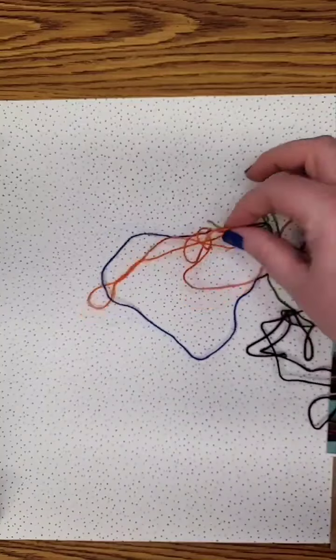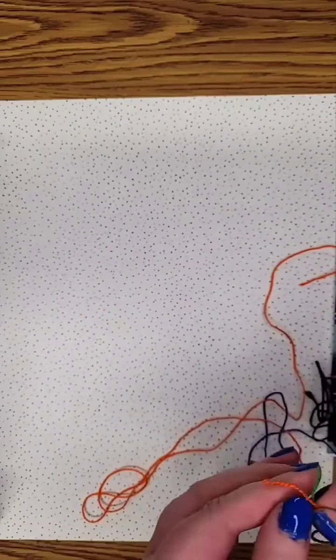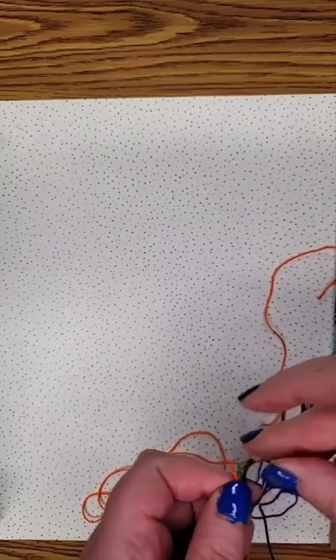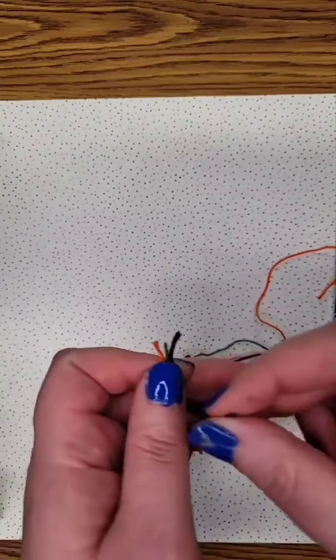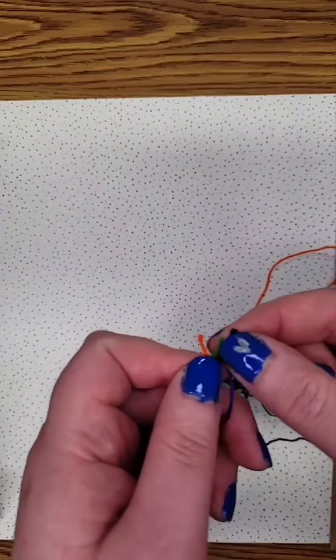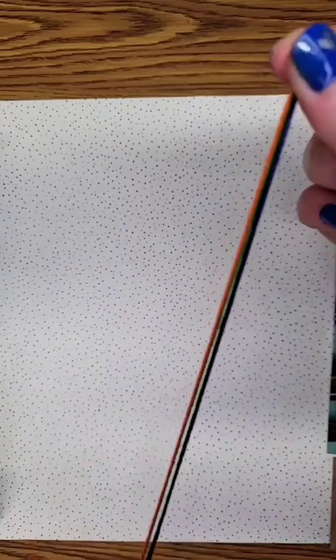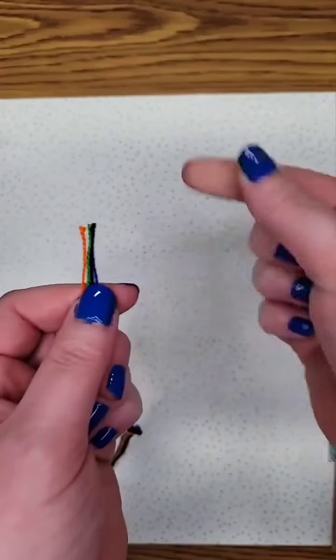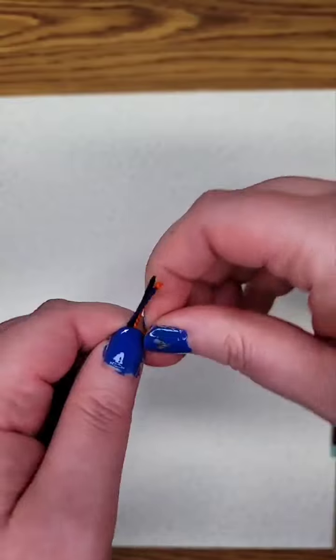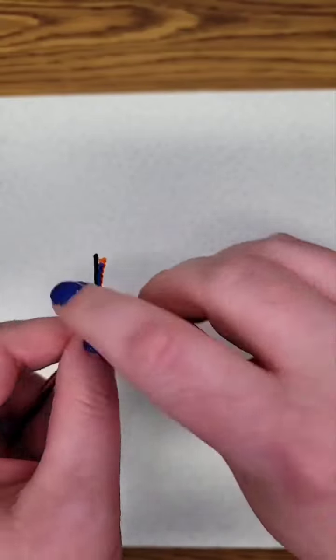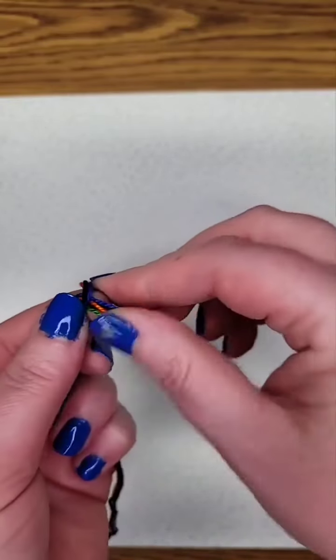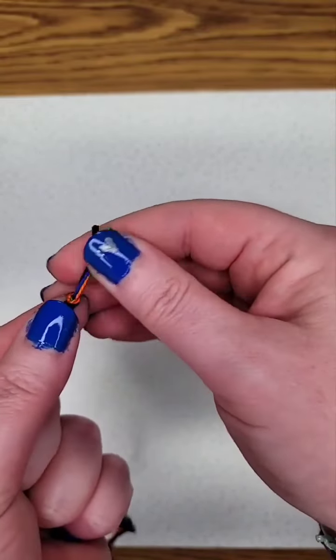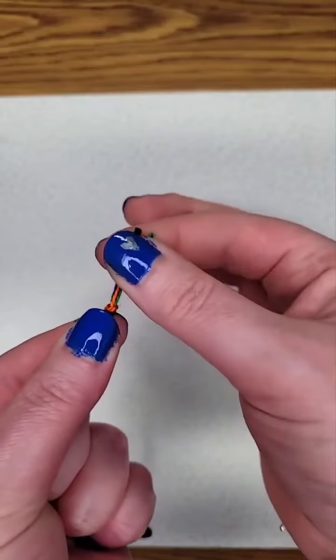Alright, so you're going to take those four strands and line them up evenly on one end. And you're going to knot them all together and leave about a half an inch of floss at the end.